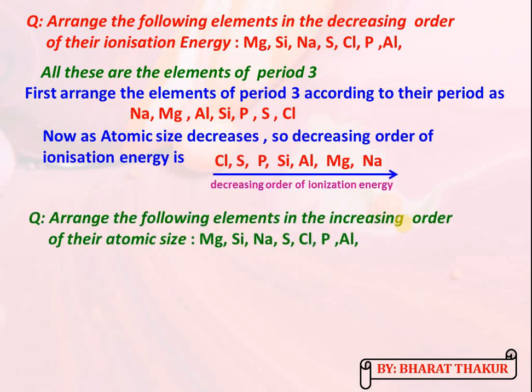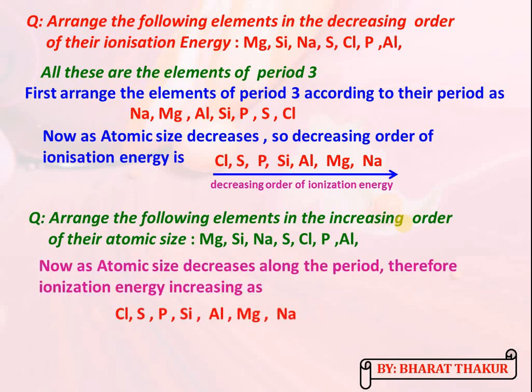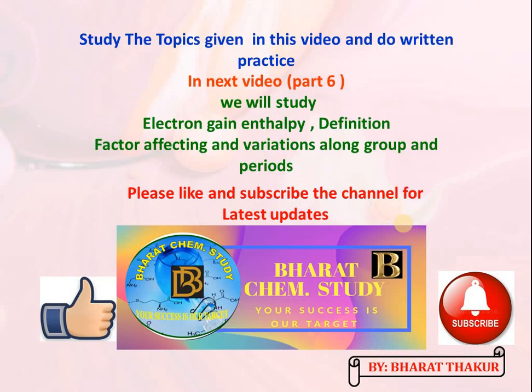Also arrange the following elements in increasing order of their atomic size — this is a recapitulation of the previous topic. Study all the topics given in this video and do written practice. In the next video, part 6, we will study the next periodic property: electron gain enthalpy, its definition, factors affecting it, and variation along group and period. Please like and subscribe the channel for the latest updates. Thank you.